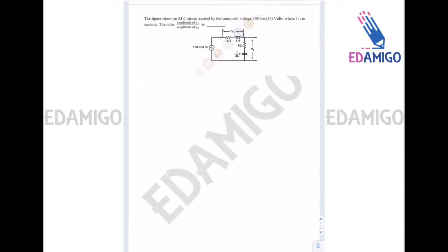This is a previous year question. It is given that 100cos(3t) is the input and we have to find the ratio of amplitude of V2 upon V1. Let's first convert the whole circuit into phasors. The input 100cos(3t) will be written as 100∠0° and omega equals 3.